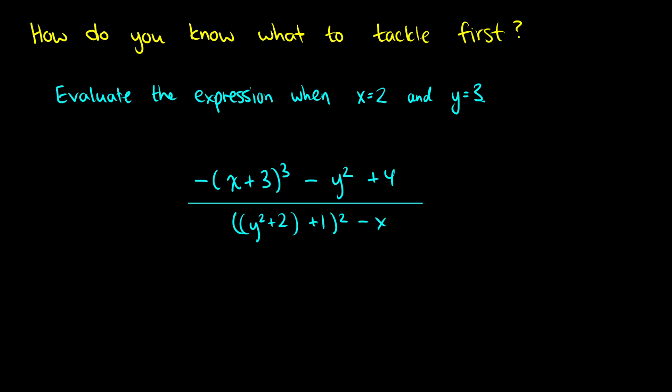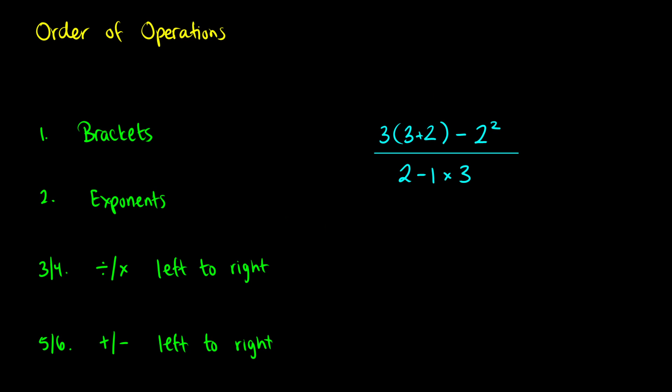Suppose we have a super complex expression like this: negative x plus 3 cubed minus y squared plus 4 divided by y squared plus 2 plus 1, all squared, minus x. How do we know what to do first? We need some sort of process that tells us what to do first. Intuitively we do stuff inside the brackets first, but after the brackets, how do we do multiplication, addition, powers? We have a typical rule for this called the order of operations.